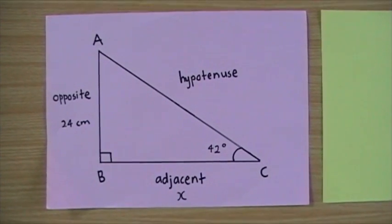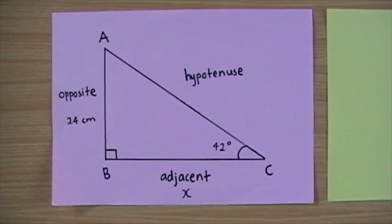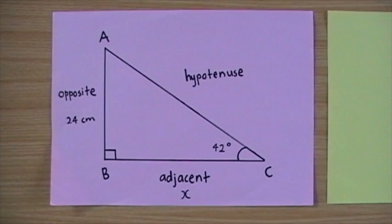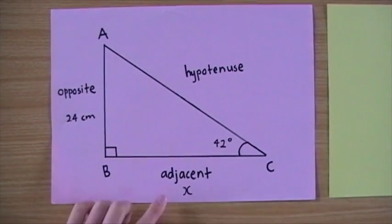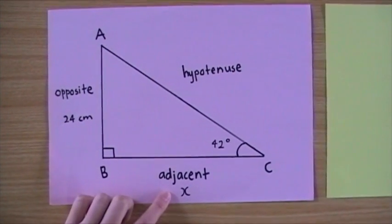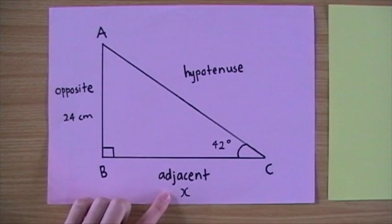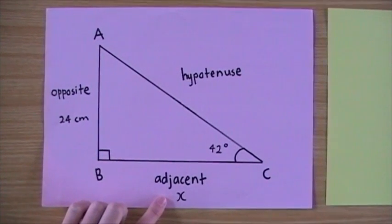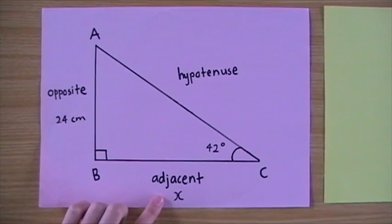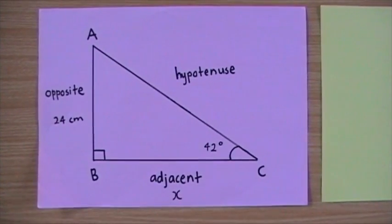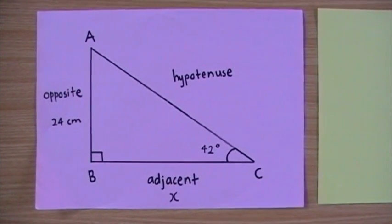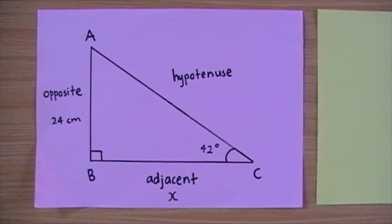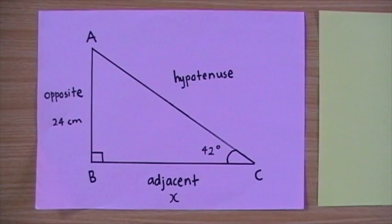Solving an equation with an unknown denominator for tangent. X is the unknown side that we have to solve. Solving means finding the unknown pronumeral to make the number sentence true.